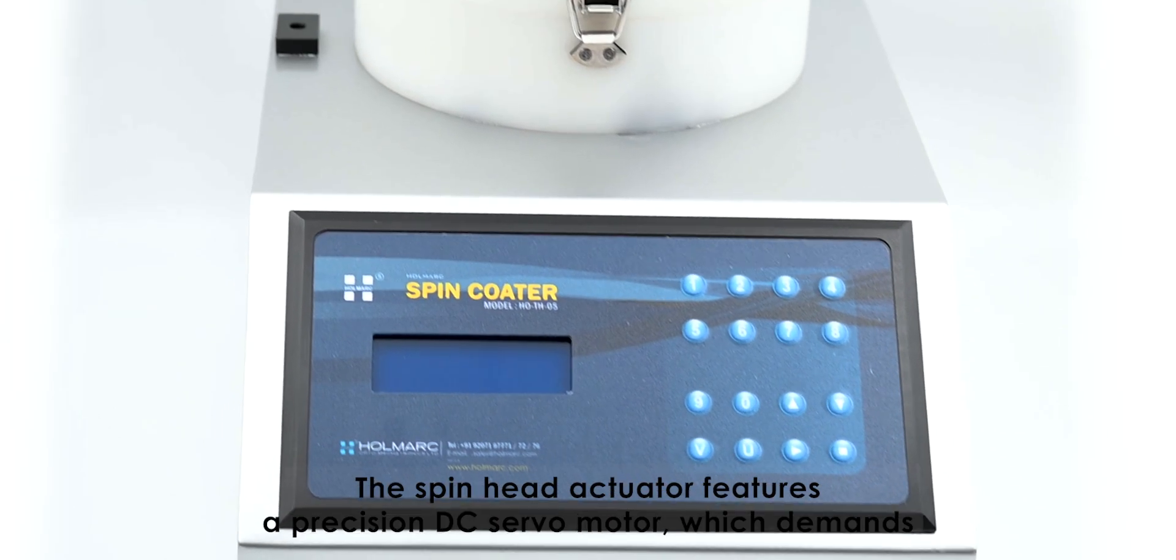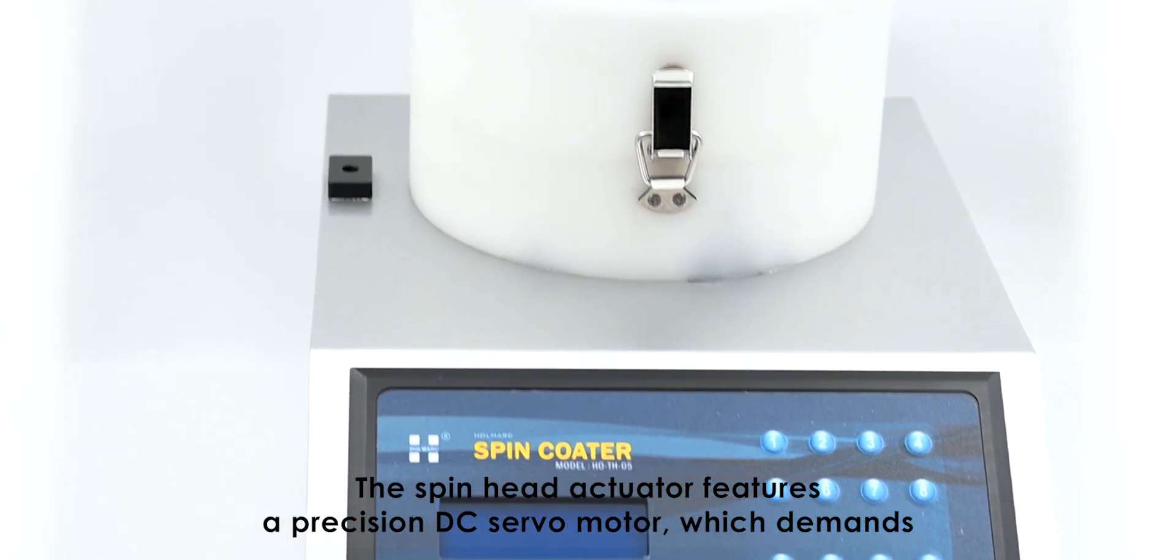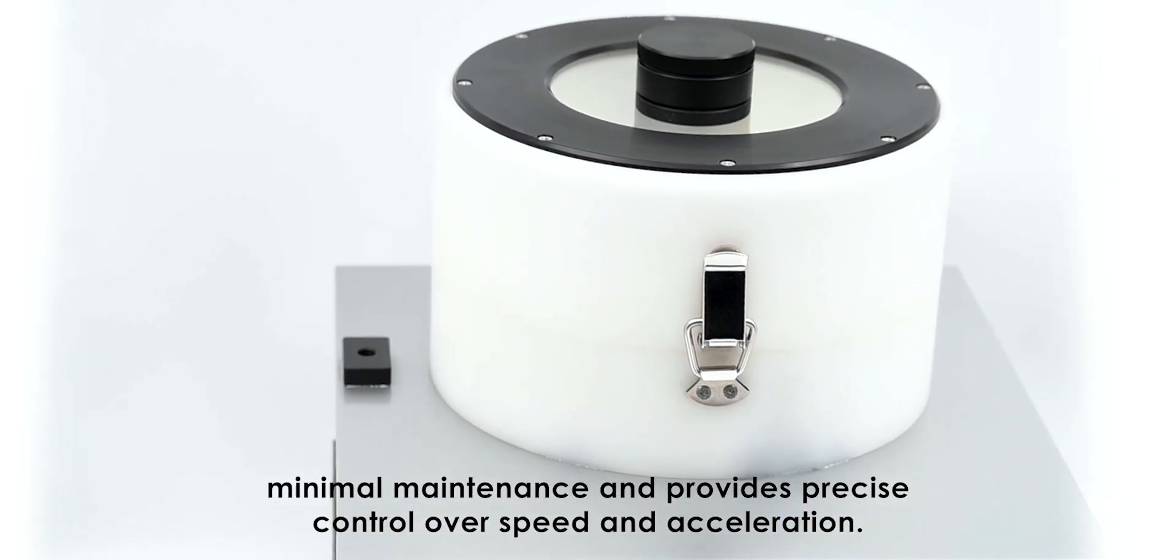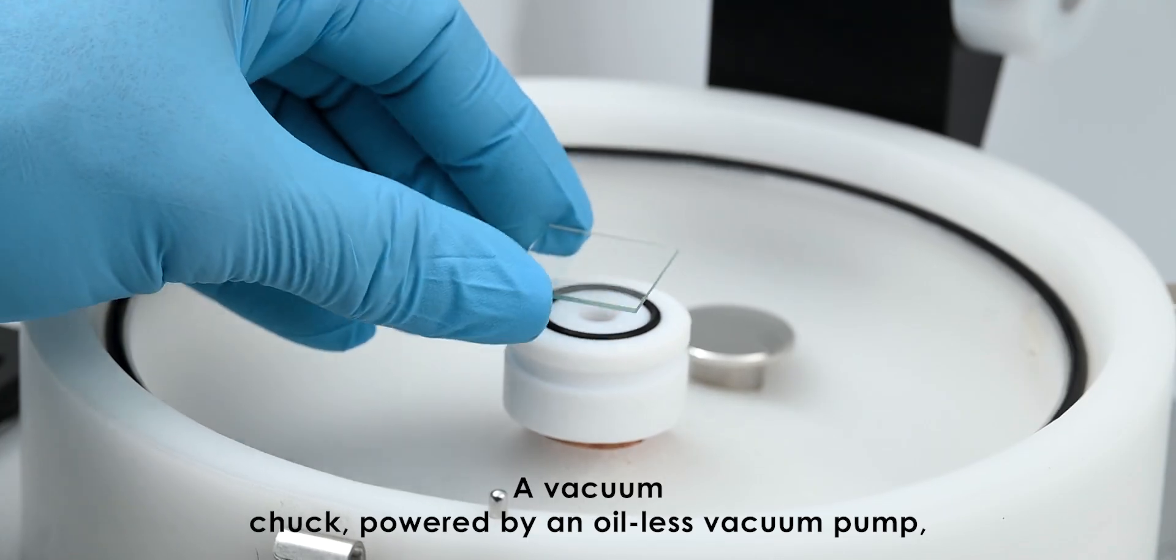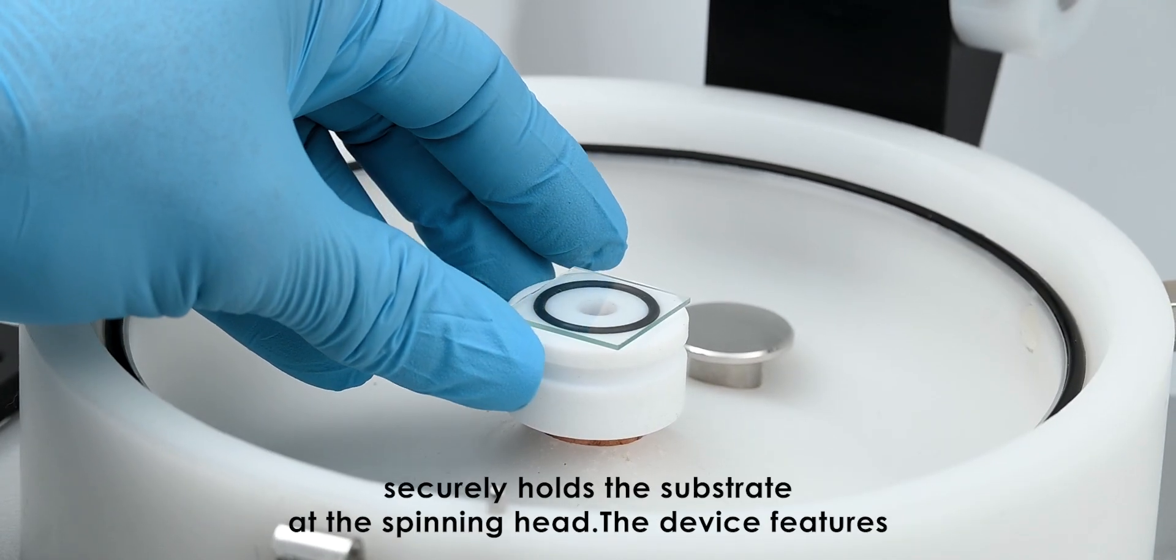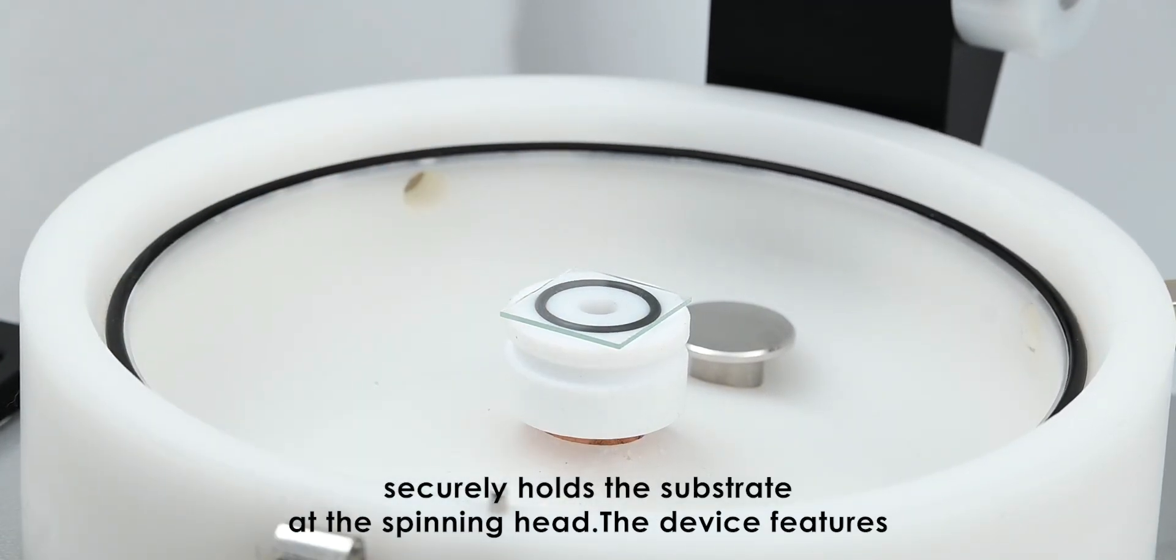The spin head actuator features a precision DC servo motor which demands minimal maintenance and provides precise control over speed and acceleration. A vacuum chuck powered by an oil-less vacuum pump securely holds the substrate at the spinning head.